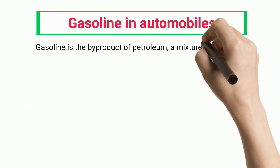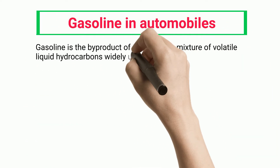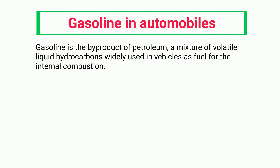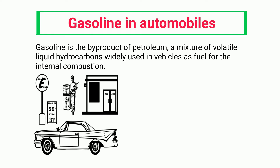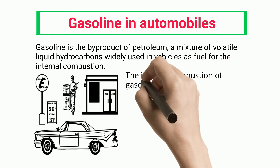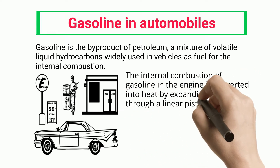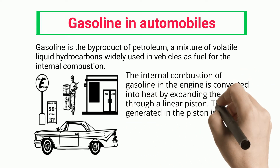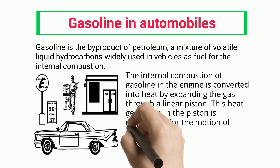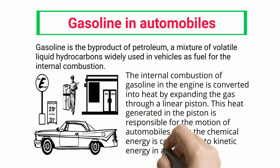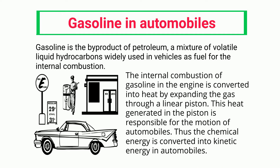Gasoline in Automobiles. Gasoline is the byproduct of petroleum, a mixture of volatile liquid hydrocarbons widely used in vehicles as fuel for internal combustion. The internal combustion of gasoline in the engine is converted into heat by expanding the gas through a linear piston. This heat generated in the piston is responsible for the motion of automobiles, thus converting chemical energy into kinetic energy.